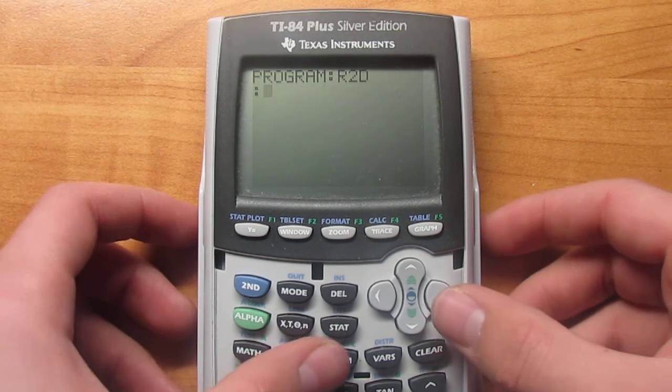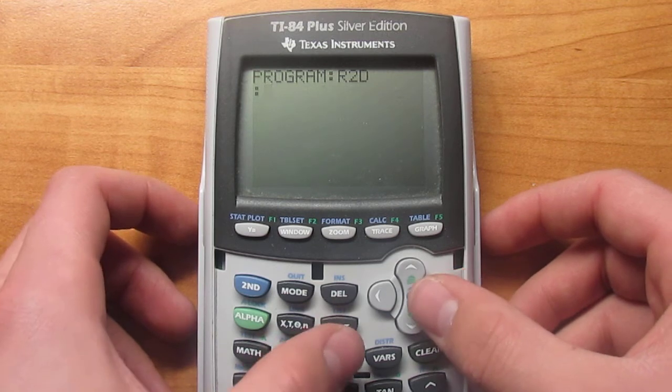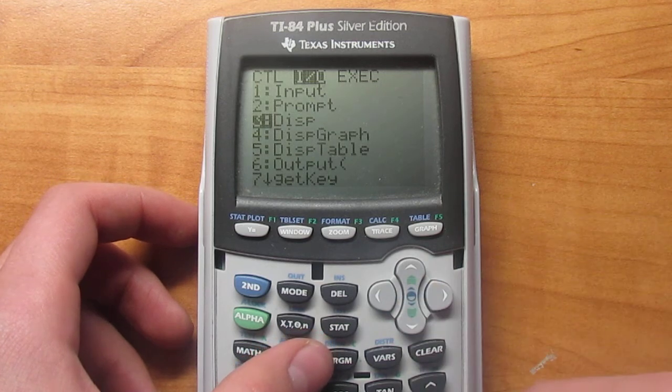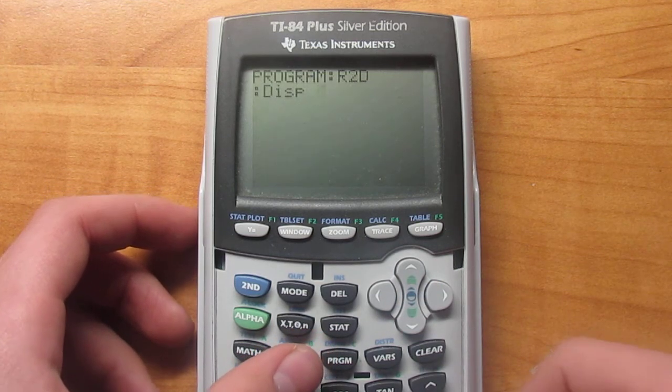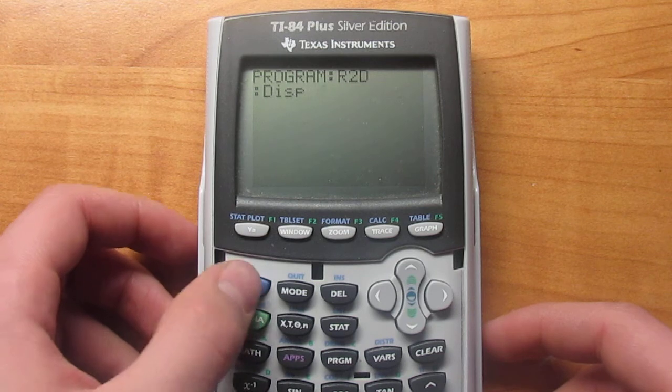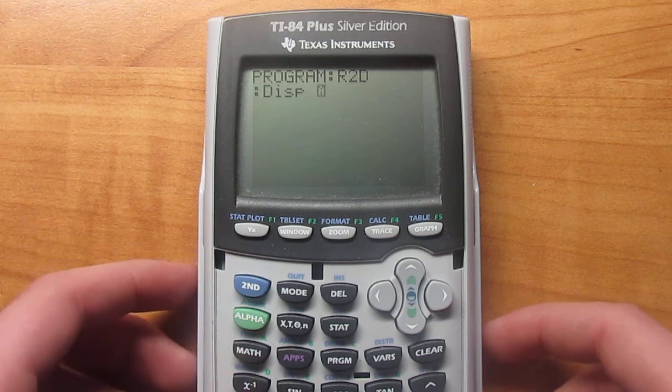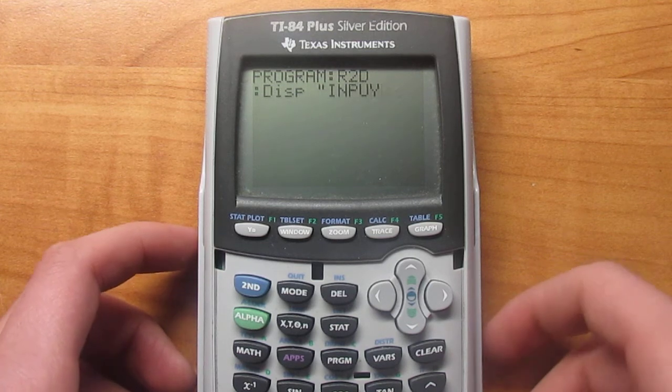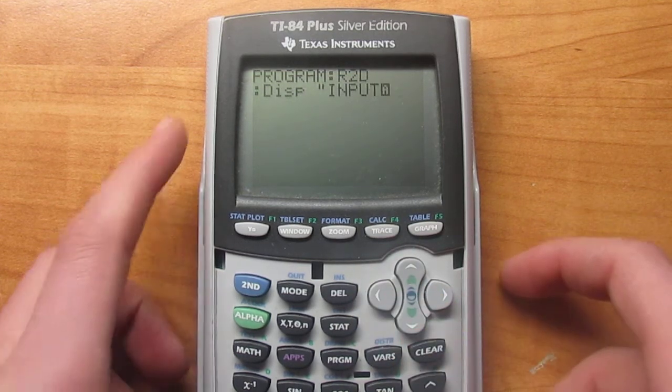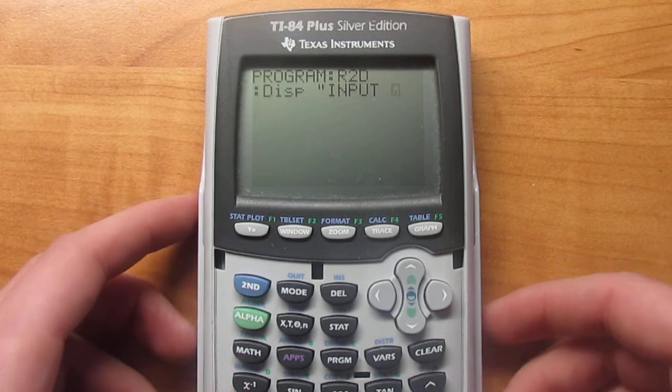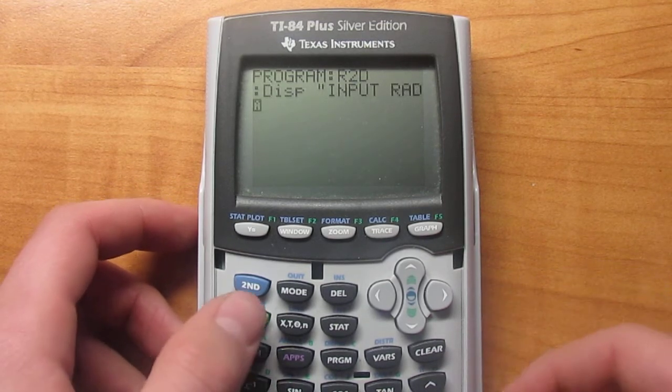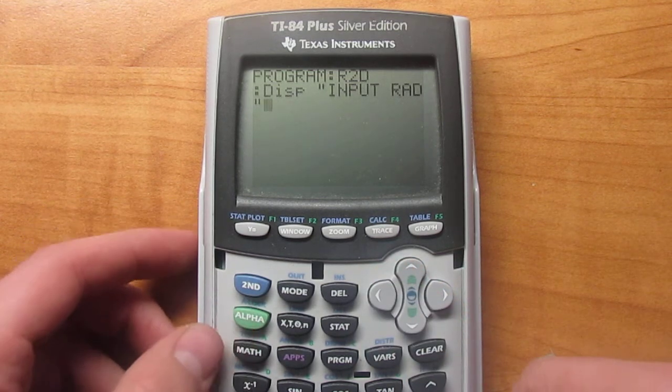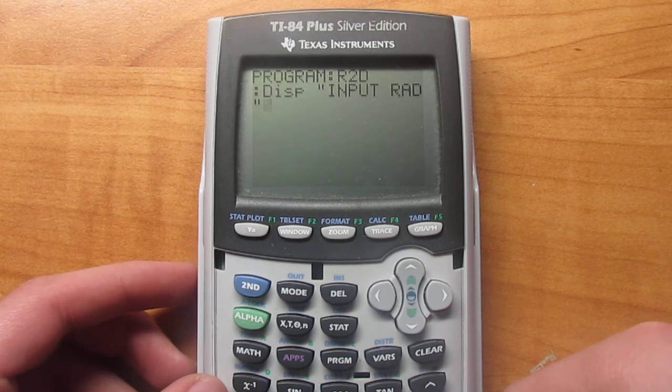we're going to start up with a display. So we're going to go program, right, and down 3 to display. Choose that one. Hit second alpha, and then plus, and then type in input radian. Or I'm just going to abbreviate with rad. And then alpha plus again. Or just plus. Then hit enter.